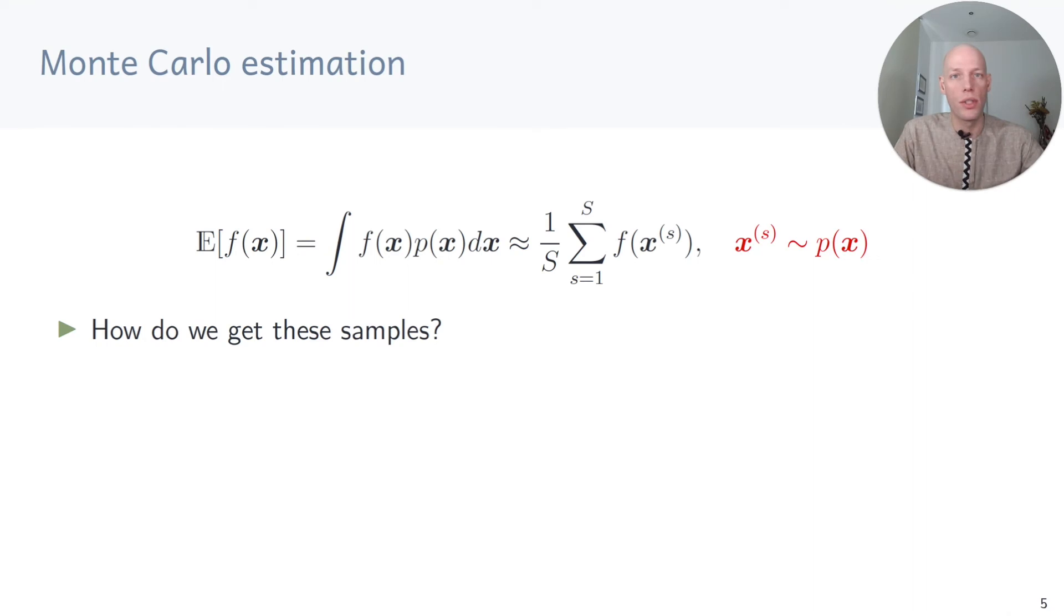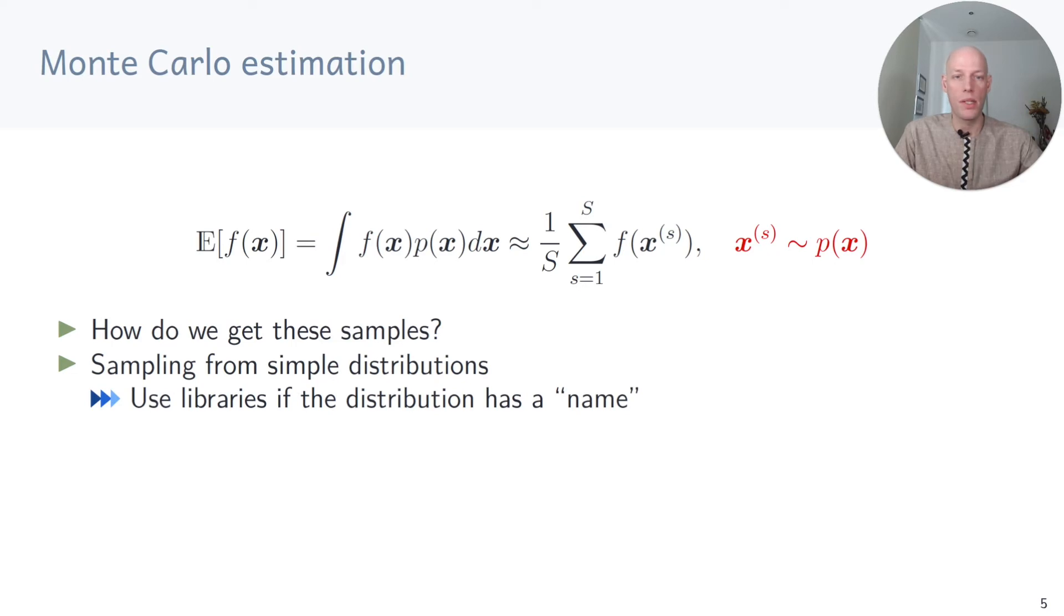So far so good. If we can draw samples, then computing the Monte Carlo estimator is fairly straightforward. But how do we get these samples? If p is a simple distribution, we can use libraries that do the job. Pretty much for any distribution that has a name, this works.